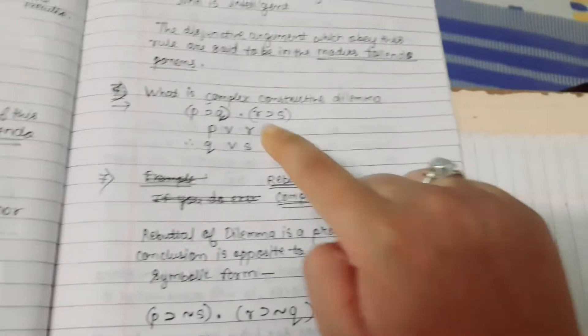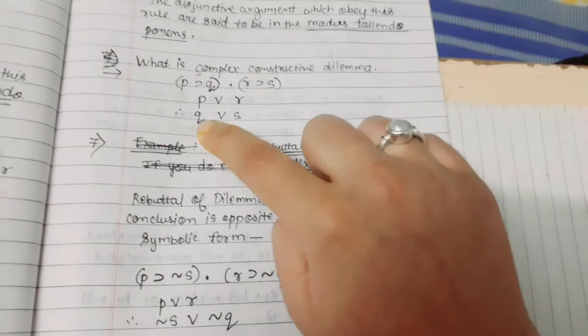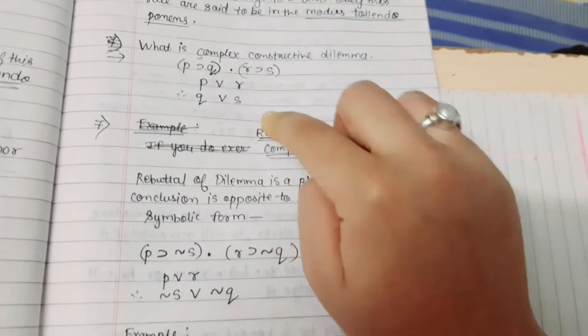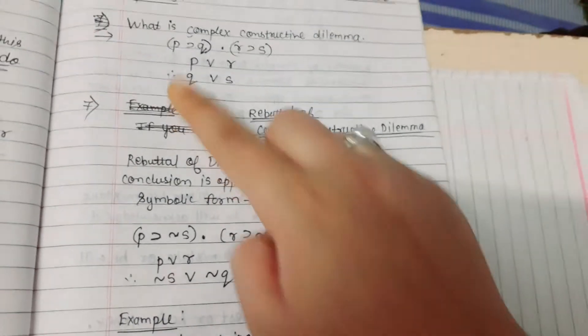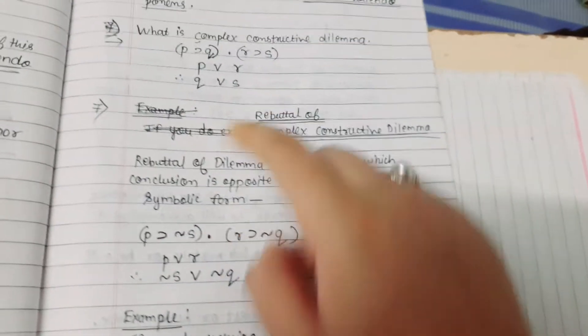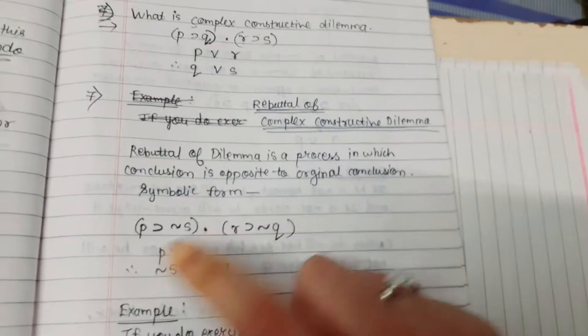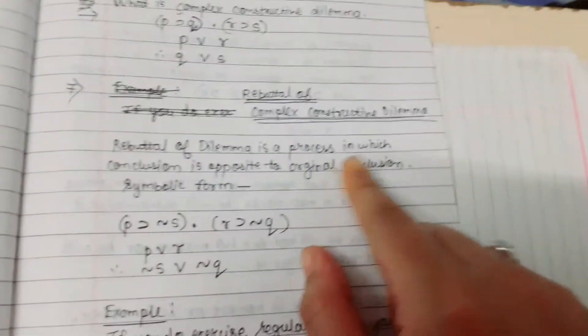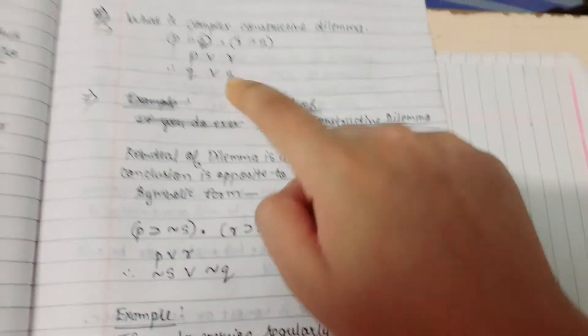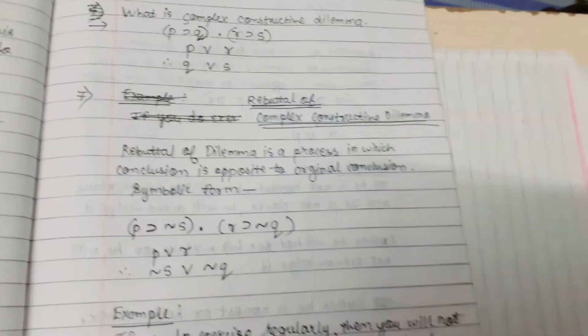As we can see that complex constructive dilemma, its conclusion was Q or S. And when its Rebuttal is done, it is exchanged. S comes here, Q comes here, and both are added negation. So Rebuttal means a process in which the conclusion is opposite to the original conclusion.